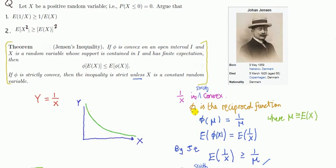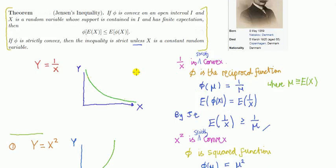Now the second example here, that the expected value of X squared is at least as big as μ squared. In other words, the second moment is at least as big as the first moment, very useful result.